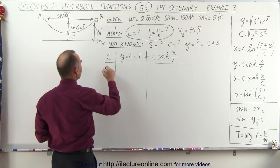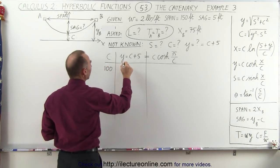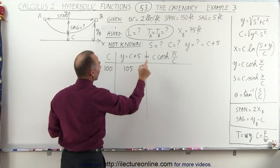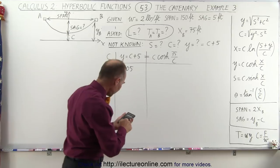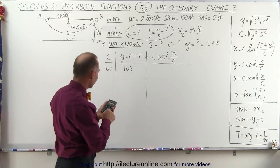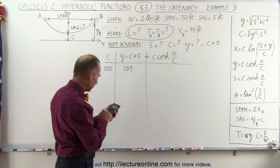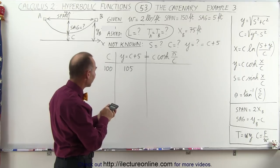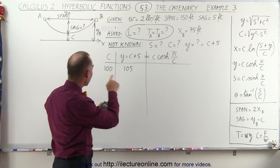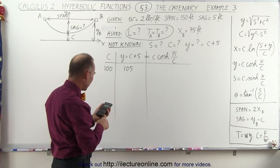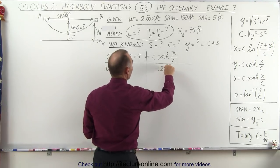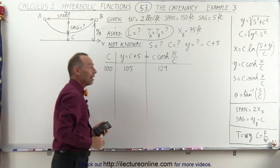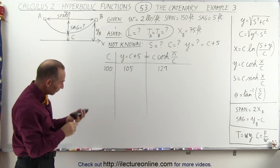So let's start with c equals 100. That means y is going to be 105. And now we're going to plug in c into that equation. So 75 divided by 100, we take the hyperbolic cosine of that and we multiply that times c which is 100. And we get 129. So that number is bigger than 105, so we're relatively close.